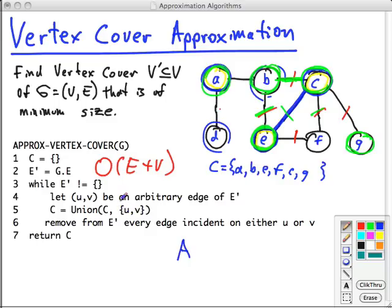Let's let A be the set of edges as chosen in line 4 here. Now, by virtue of the algorithm, every time you choose an edge and add its two vertices to C, you remove all other edges that are touching it. So no two edges in A share a vertex. So in order to cover A, the size of the optimal solution must be at least the size of A, because there has to be one vertex in the optimal solution covering each edge in A, because none of the edges in A are overlapping on the same vertex. So that gives us one bound.